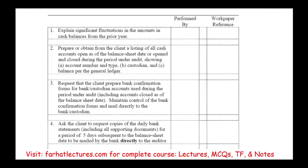Then you have a list of procedures. I have four steps here, but it can be pages and pages for certain accounts. The first step is to explain significant fluctuations in the cash balance — comparing cash balance from the prior year, and if there's a significant change up or down, we need to explain that change. Who performed this: MF. Where can you find this workpaper: A1.